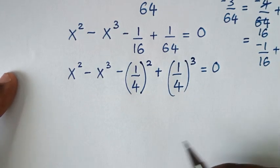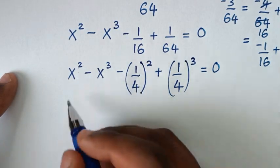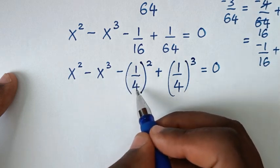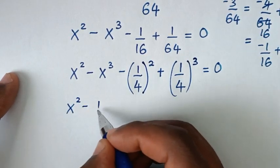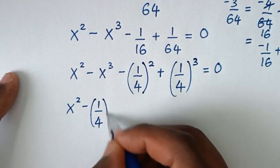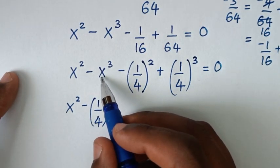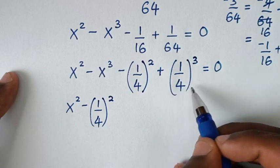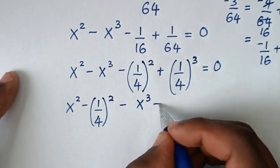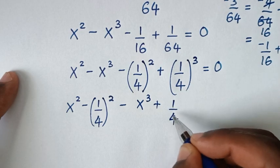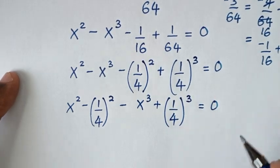Then in the next step, grouping terms with like powers together: it will be x squared minus (1/4) squared, then minus x cubed plus (1/4) cubed, is equal to 0.